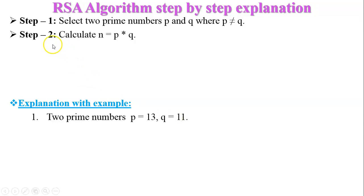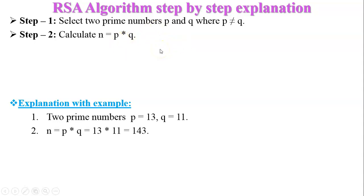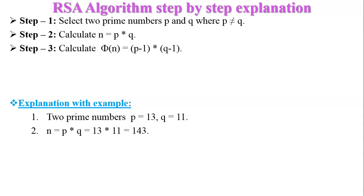Step number two: calculate n equal to p multiplied by q. Multiplying both numbers gives us n equal to 13 times 11 equal to 143.